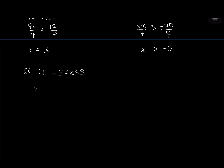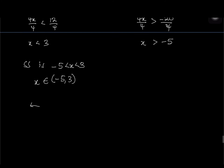In interval notation for question 14: x belonging to (negative 5, 3) using parentheses. On the number line, place negative 5 and 3 with open parentheses and connect them.